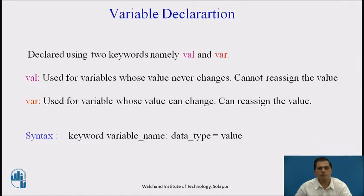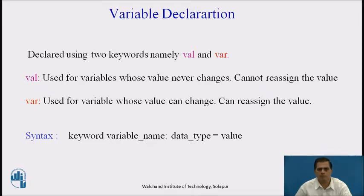Now we are going to see variable declaration in Kotlin programming language. A variable is declared using two keywords: val and var. Val is a short form of value. Val is used for a variable whose value never changes and it cannot be reassigned. Var is used for a variable whose value can change and we can reassign this value anywhere in the program.